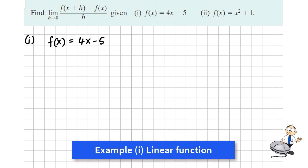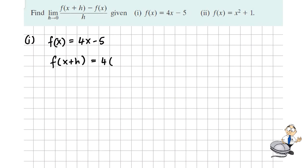We're given that f of x is 4x minus 5. We're going to work out f of x plus h. This means putting in x plus h instead of x. So we'll expand this.